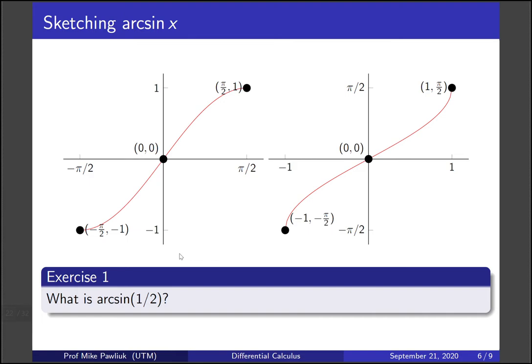Now let's answer an exercise. What is arcsine of one half? Now I know many of you can solve this algebraically, but let's look at what this looks like geometrically in the picture. So arcsine of one half means plug in one half into arcsine. So here's one half, if I plug it in I get this height. So the question is what is this height?